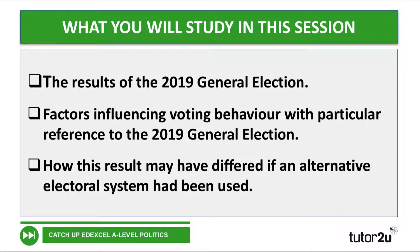So what will we look at in this session? We'll look at the results of the 2019 general election. We'll look at factors that influenced people's voting behaviour in that 2019 general election, and think about that in general too. We'll also look at how the result may have differed if a different voting system had been used.